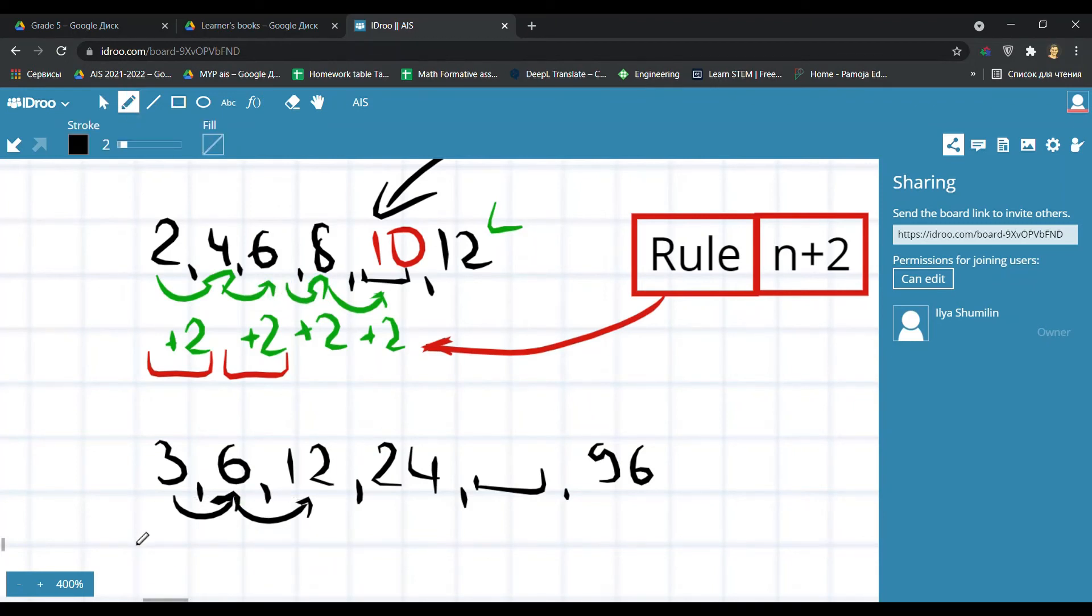It's definitely not subtraction, but anyway we can somehow increase the number. Look at this: 3 times 2 equals 6, 6 times 2 equals 12, 12 times 2 equals 24, and 24 times 2.